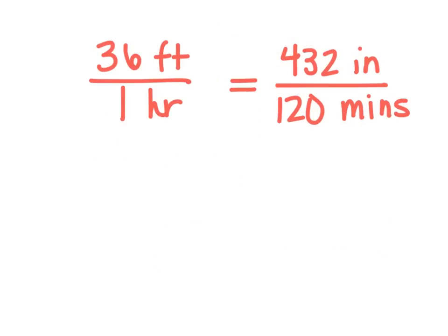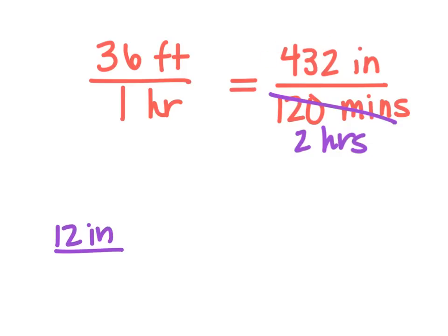Let's take a look at the next one — are these two rates equivalent? First thing I notice is I have hours and minutes, so I want to change that. This time I'm going to change the second one: 120 minutes is two hours. Now I have hours and hours — awesome. But up here I have inches and feet. I know there are 12 inches in one foot. I need to either change this to inches or change the other one to feet. I'm going to change 36 feet to inches.